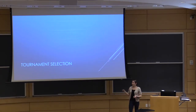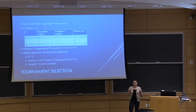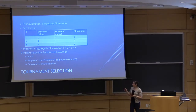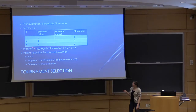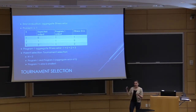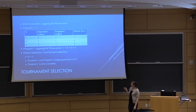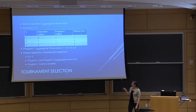I'm going to introduce tournament selection, which we used as a comparison and is the original vanilla way of doing genetic programming. In error evaluation, we calculate the aggregate fitness error of a program. For example, if we're trying to get a program that does x minus 1, with test inputs 1, 2, and 4 and expected outputs 0, 1, and 3: Program 1 just outputs 1 all the time, giving fitness errors of 1, 0, and 2 for each test case, so its aggregate fitness error is 3.